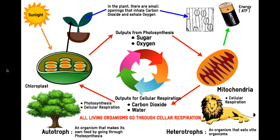There are two kinds of organisms: autotrophs and heterotrophs. Heterotrophs are organisms that eat other organisms — for example, lions are heterotrophs because they eat zebras. On the other hand, autotrophs are organisms that make their own food. This includes plants and trees.